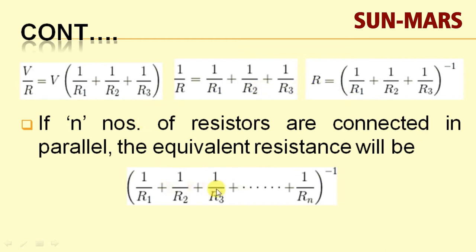If you have a number of resistances in parallel, then the total equivalent resistance is the reciprocal of the sum of the reciprocals of individual resistances. For example, R1 is 1 ohm, R2 is 2 ohm, and R3 is 3 ohm. The total equivalent resistance works out to approximately 0.55 ohm. So the total equivalent resistance is always less than the smallest individual resistance connected in parallel.